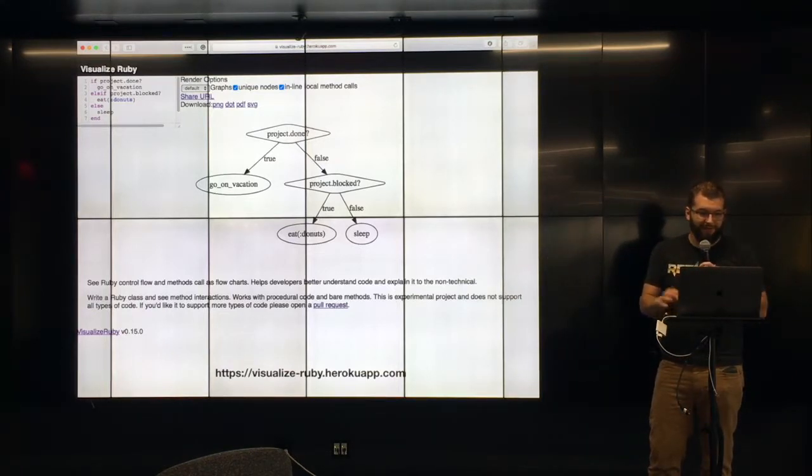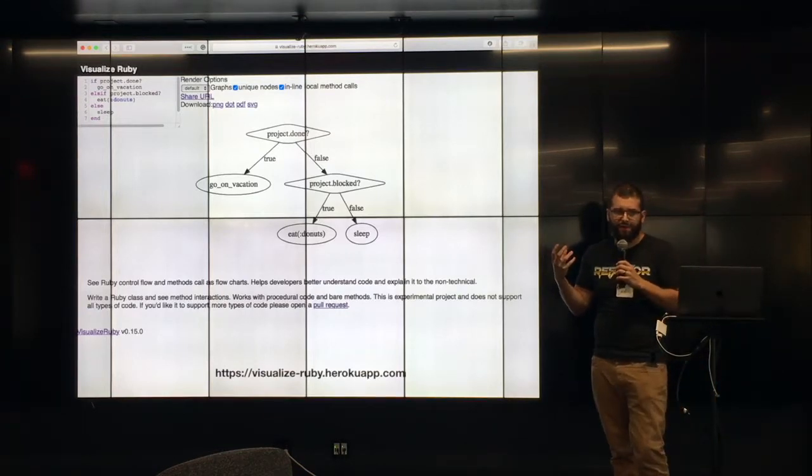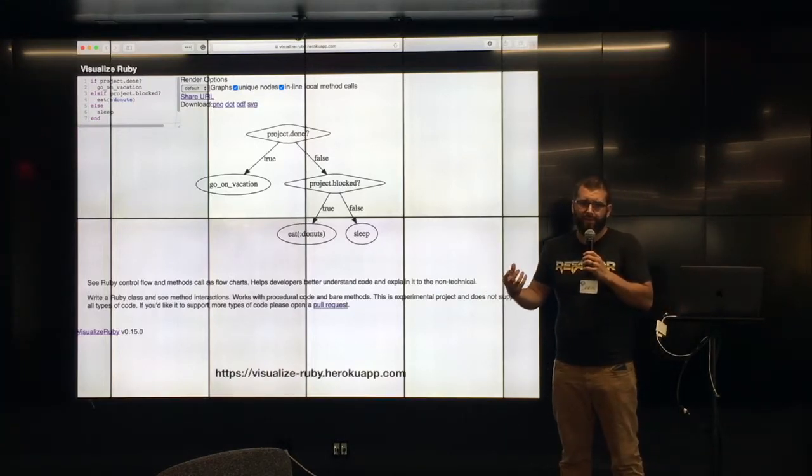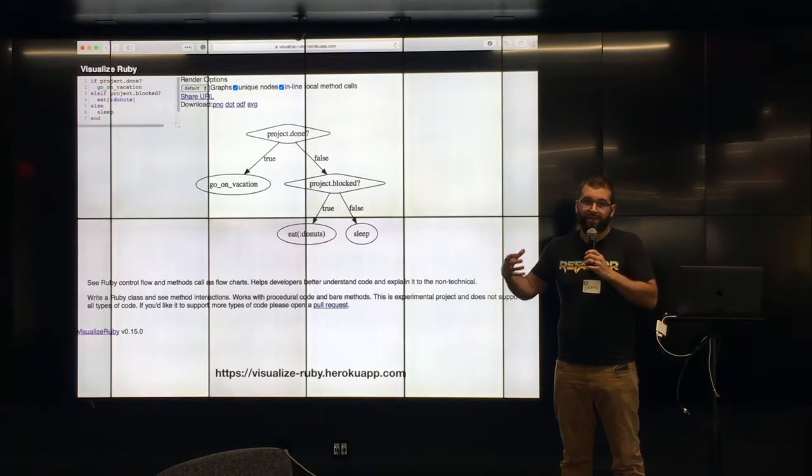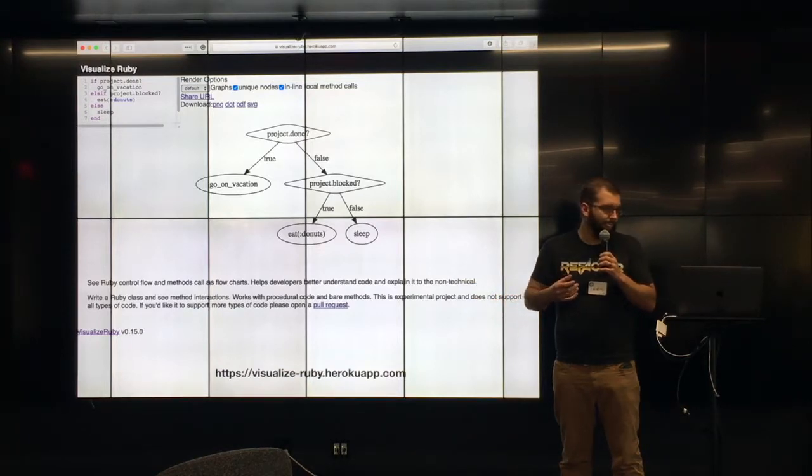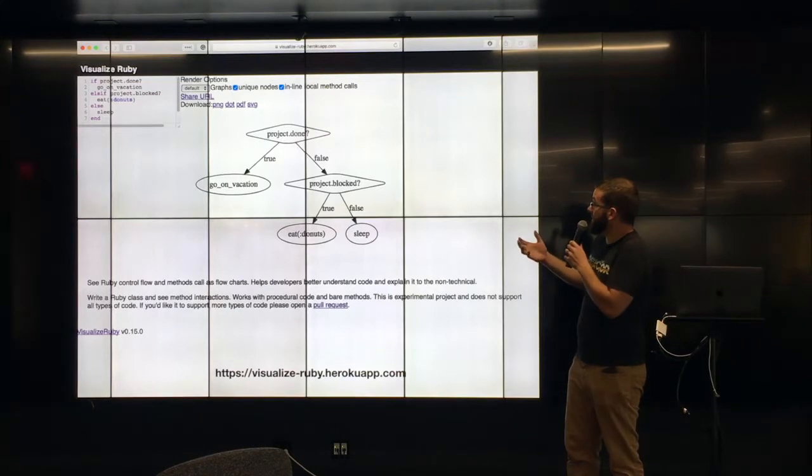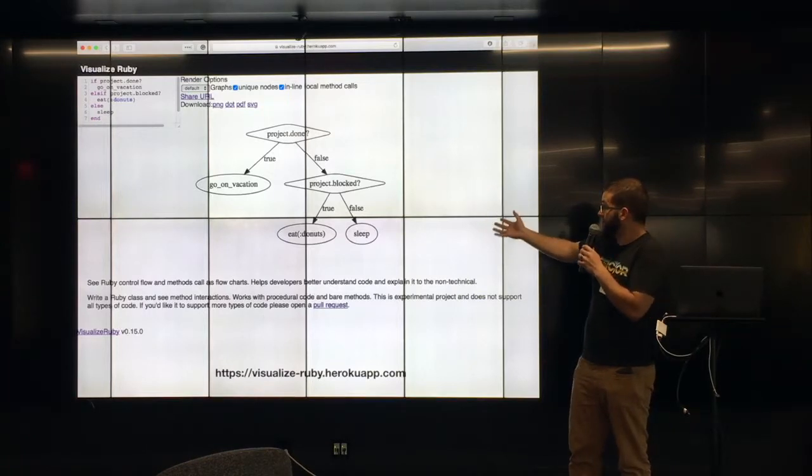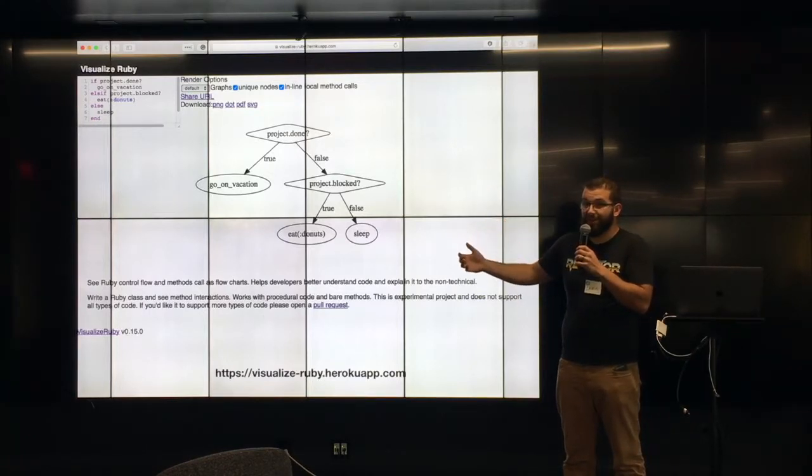Another thing this is kind of cool for is if you're actually just wanting to, maybe you didn't start with Ruby code. Maybe you're just thinking through a process. And rather than learning the GraphViz dot language or something, you can just scribble down some Ruby code. It doesn't even have to work. It can just be, I mean, this code doesn't really, all of the methods aren't really linked to something. But in the end it produces this. So if you're just kind of sketching out the graph really easily, you can do it in the language that you know, Ruby.